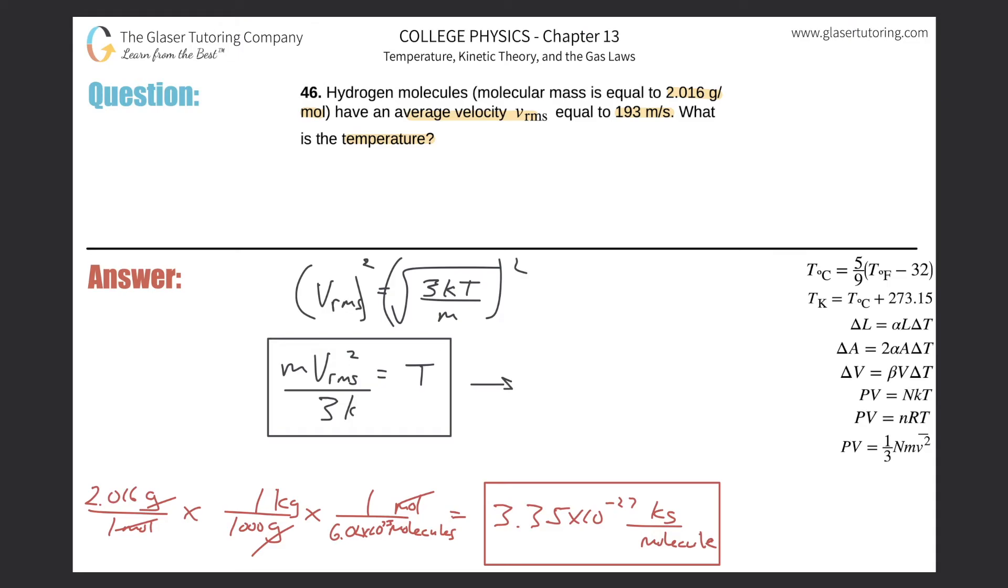Now I have all the pieces to my puzzle, so let's just plug it all in. The mass here is what we found—we have it in kilograms, 3.35 times 10 to the negative 27th, multiplied by then that velocity squared, so that's 193 squared from the problem up at the top, and then 3 multiplied by the Boltzmann constant of 1.38 times 10 to the minus 23.